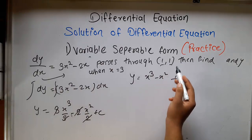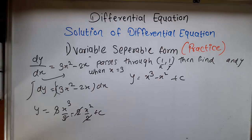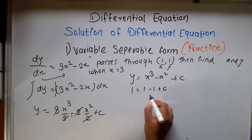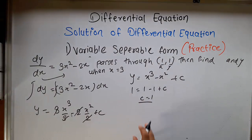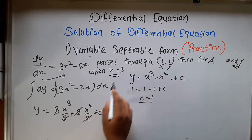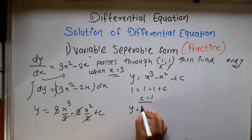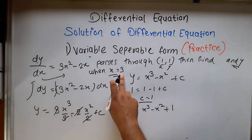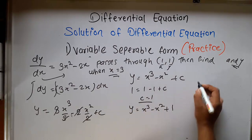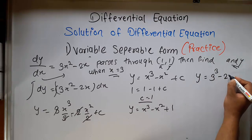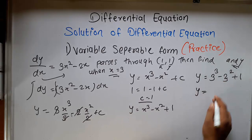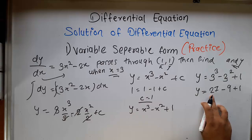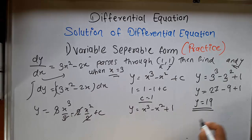Now we have the point (1, 1): x equal to 1, y equal to 1. So we put that value to find c. Putting y equal to 1 and x equal to 1: 1 equal to 1 minus 1 plus c, so c equal to 1. Now we have to find the value of y when x equal to 3. Our equation becomes y equal to x cubed minus x squared plus 1. Putting x equal to 3: y equal to 3 cubed minus 3 squared plus 1, so y equal to 27 minus 9 plus 1, which gives y equal to 19. So this is the value of y.